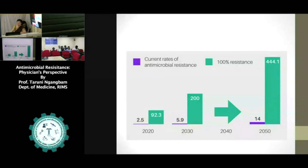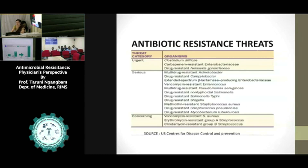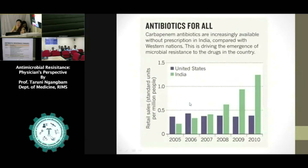This chart shows resistance predictions — by 2050 we are expecting 100% resistance to certain antibiotics. The number of new antibiotics being developed is decreasing, and there are virtually no newer antibiotics now. These are the common resistance threats we are currently facing. Comparing with data from studies conducted in 2010, resistance has increased significantly.